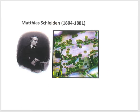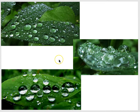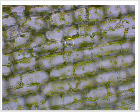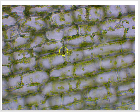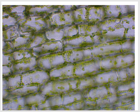Schleiden was a botanist. He was very interested in plants and pretty much put whatever plant tissue he could get a hold of under the microscope. Plants, of course, have different structures — they have roots and stems and leaves. Here we see some leaves in a forest after a rain. If we put a leaf under the microscope — this happens to be an aquatic leaf — we see this structure. Notice these rectangular units. These are leaf cells. And so a leaf is multicellular; a plant is a multicellular organism. The cells are stuck together to form a larger structure.